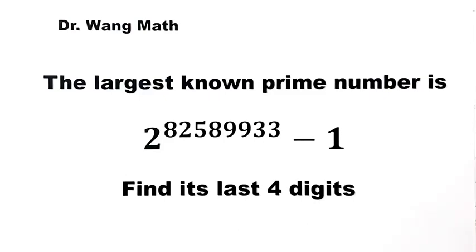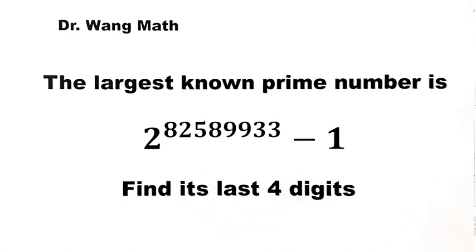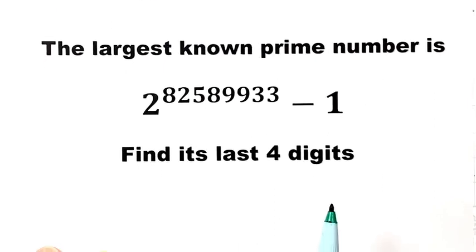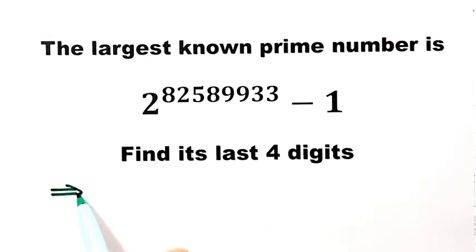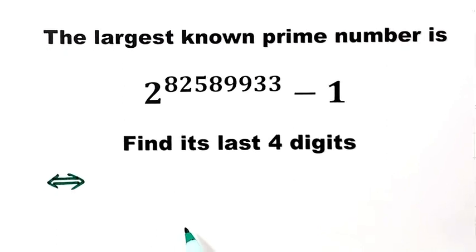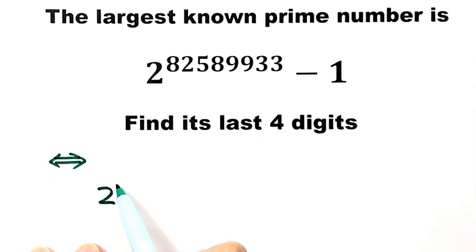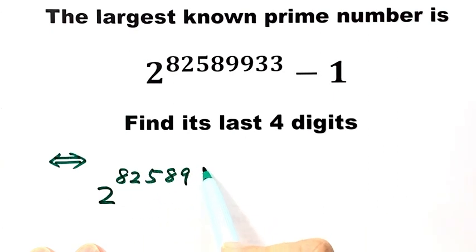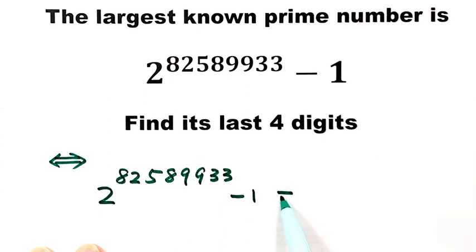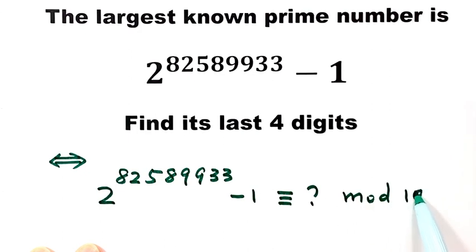In this video, we can solve this question: what are the last four digits of the largest known prime number? Now let's see how to solve it. This question is equivalent to finding the remainder of 2 to the power of 82,589,933 minus 1, divided by 10 to the power of 4.